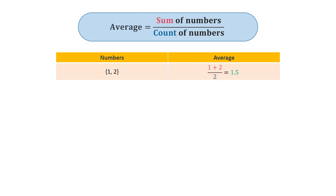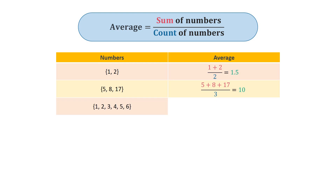Let's take another example. We have the following three numbers. We do the same again — we sum the numbers and then divide by 3, because there are three numbers. Let's take another example. We have the following 6 numbers. We do the same again. This gives the number 3.5 as average.